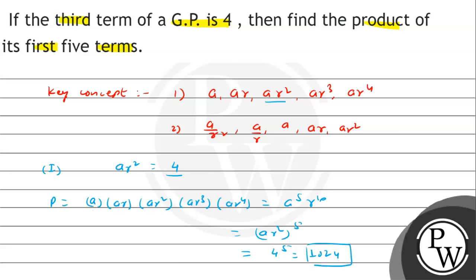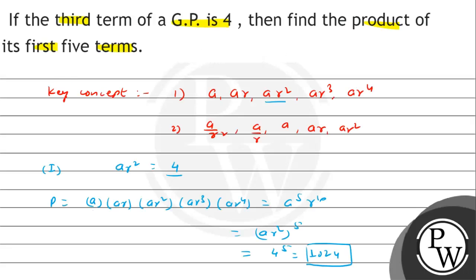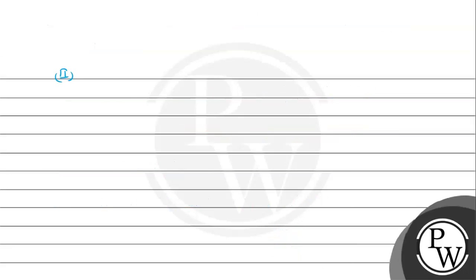1024. So this is our first concept. Second concept: according to the second concept, the middle term, that is the third term, has value 4.